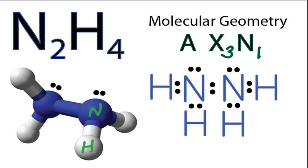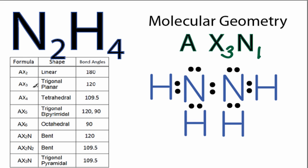You could have memorized that AX3N is a pyramidal molecular geometry, or you could look it up on a table. As we go down our table, we have AX2, AX3, all the way to AX6. We have AX2N, AX2N2, and then there it is, AX3N.